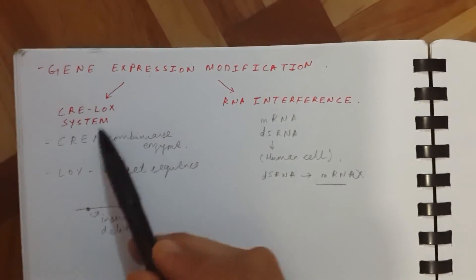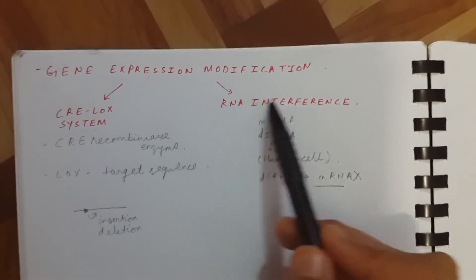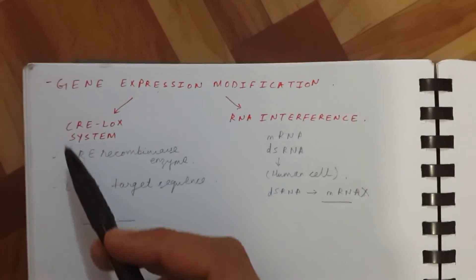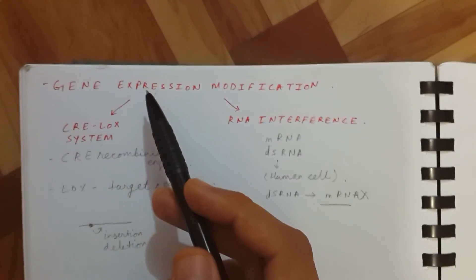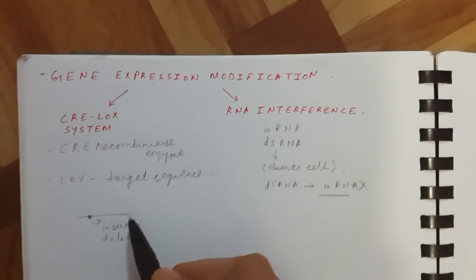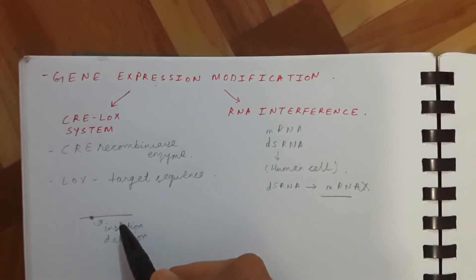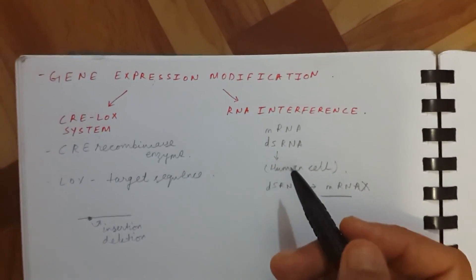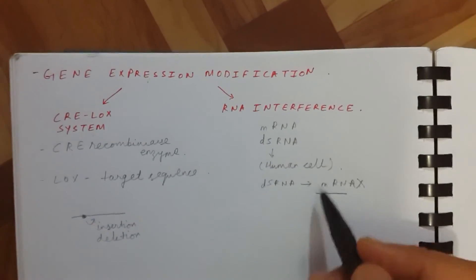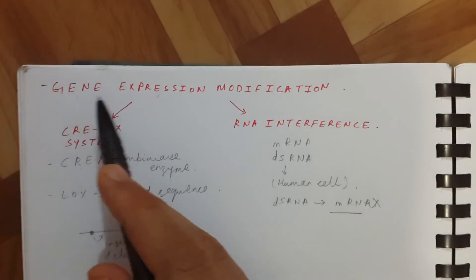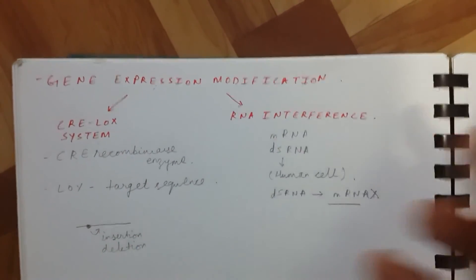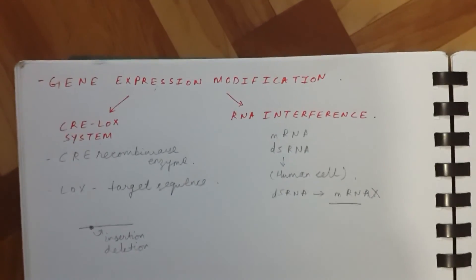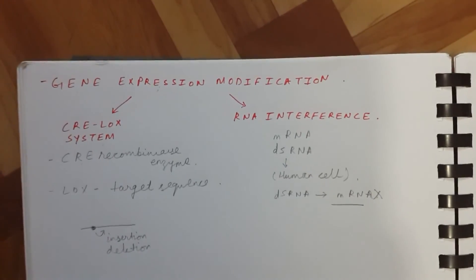So these are the two techniques — CRE LOX system and RNA interference — which we can use to change gene expression. By insertion we can increase it, and by deletion or by destroying the mRNA we can decrease gene expression. That's it for the lab techniques in biochemistry.